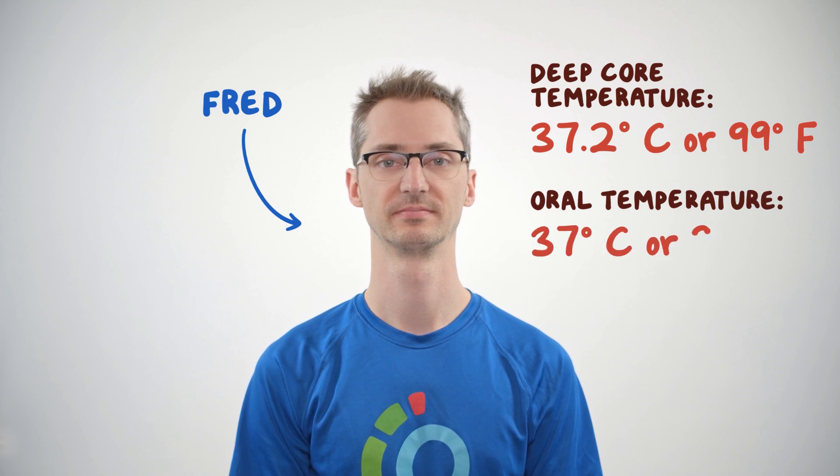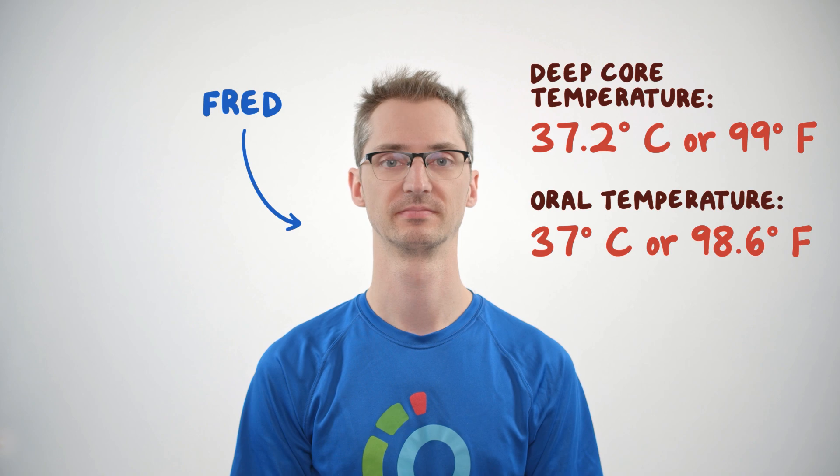Meet Fred. Fred's deep core temperature is stable, averaging 37.2 degrees Celsius or 99 degrees Fahrenheit. Fred's oral temperature is also normal, 37 degrees Celsius or 98.6 degrees Fahrenheit. Fred's body temperature is where it should be, but what if it weren't?